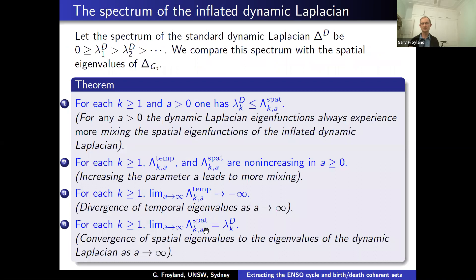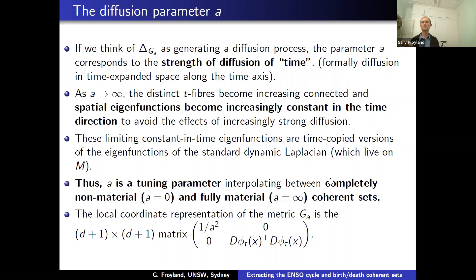You can think of a as a tuning parameter that interpolates between completely non-material coherent sets when a is zero and fully material coherent sets when a is infinity. The local coordinate representation of the metric has the little g_T's as before, with an additional diagonal term of 1/a² in the time direction. As a → ∞, the distance in the time direction goes to zero because diffusion is very strong and different time fibers become increasingly connected.